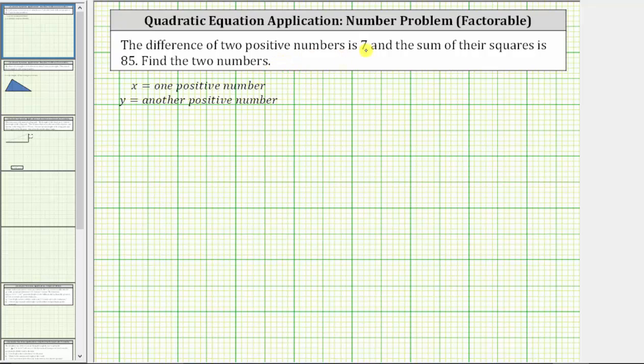The difference of two positive numbers is seven, and the sum of their squares is 85. Find the two numbers.